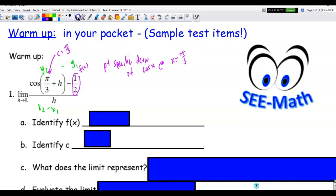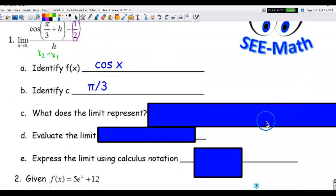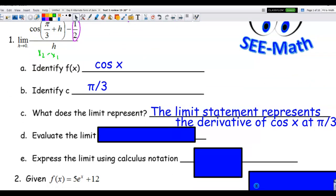All right, so the function that I've identified is cosine of x. The value of c, because it is point specific, is pi over 3. And the limit represents, I've already written that down but you can see it again, the limit statement represents the derivative of cosine of x at pi over 3.